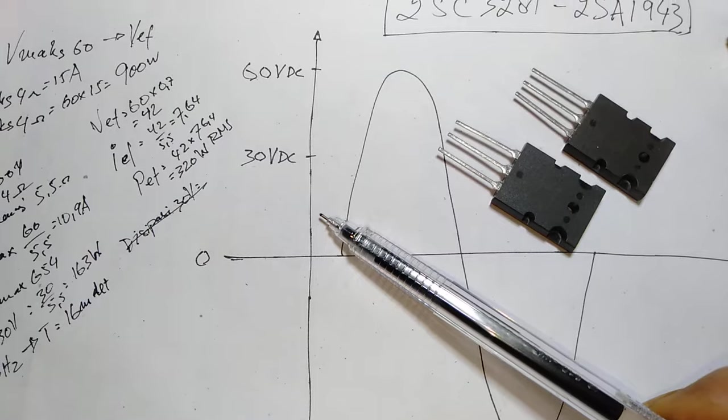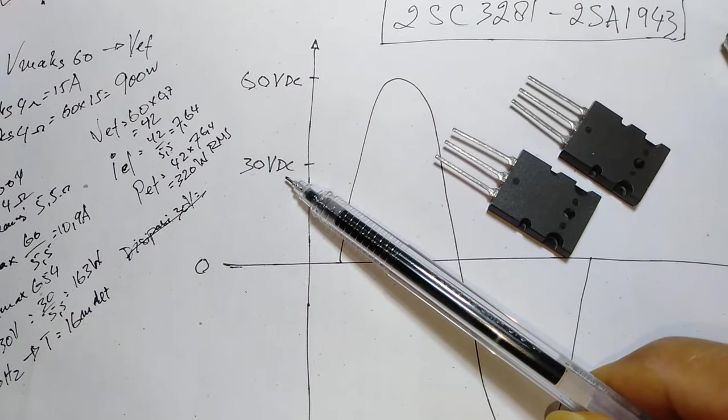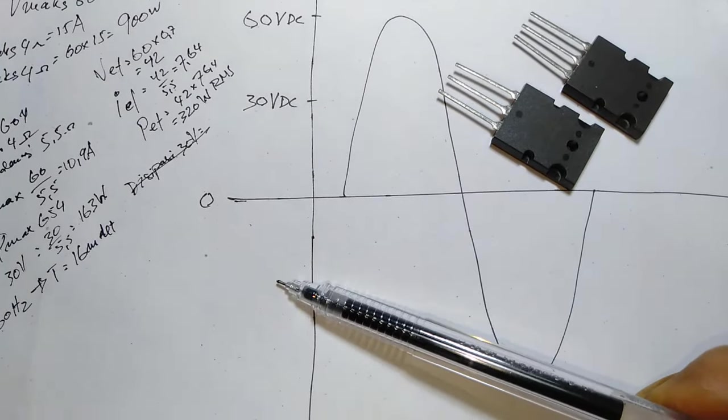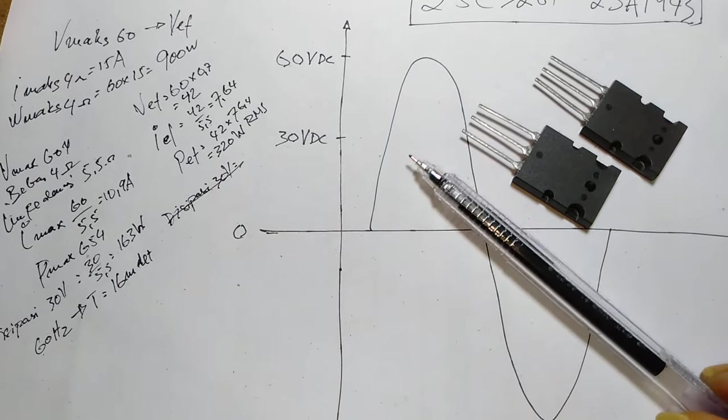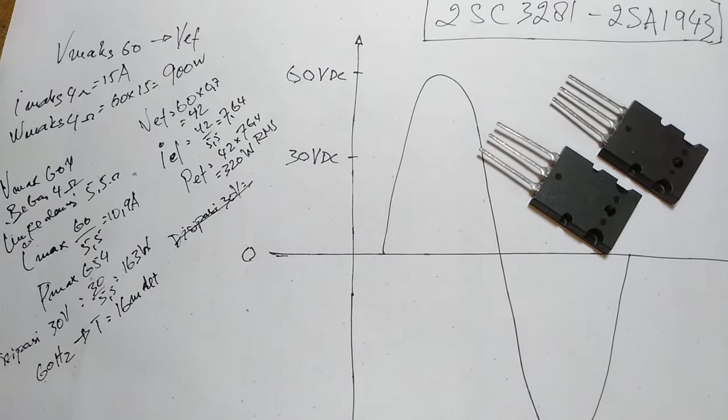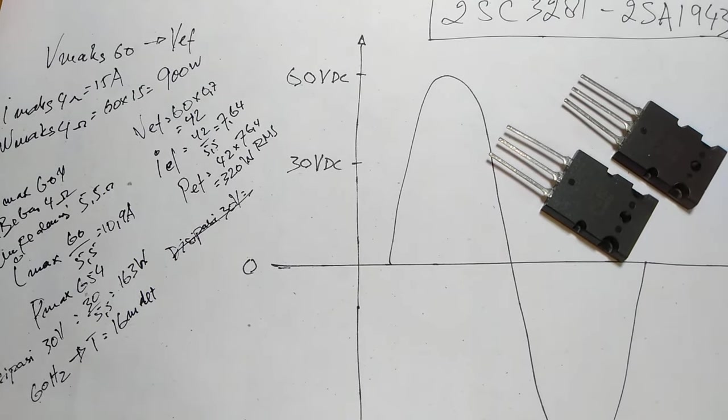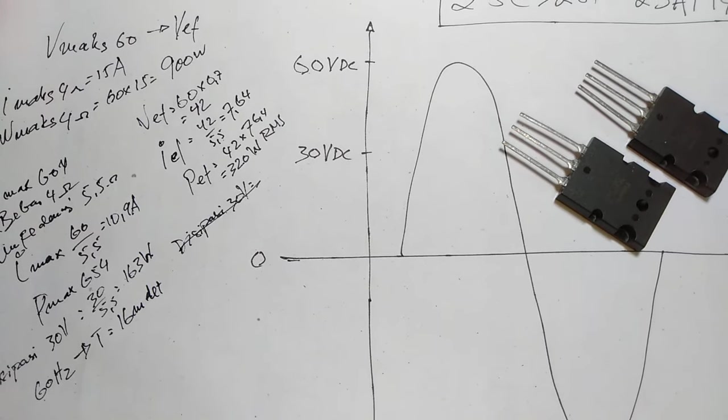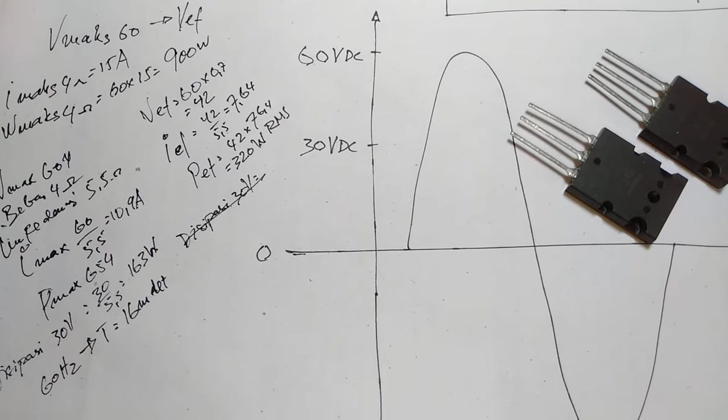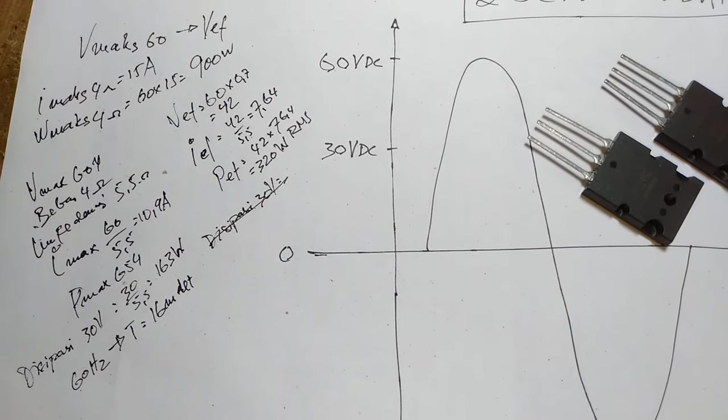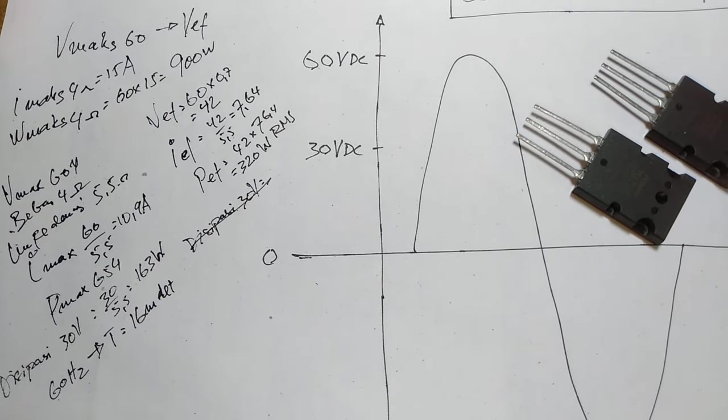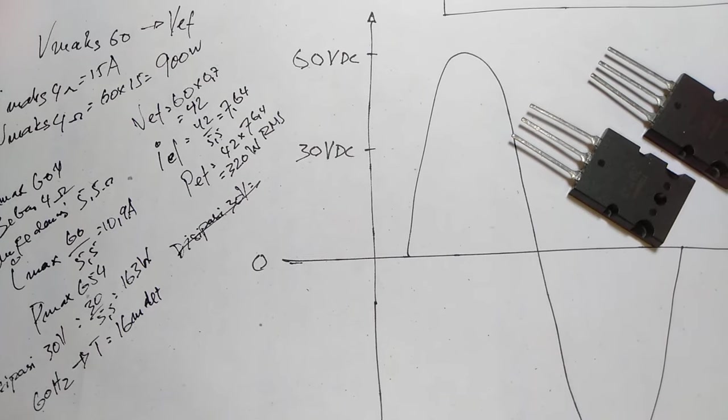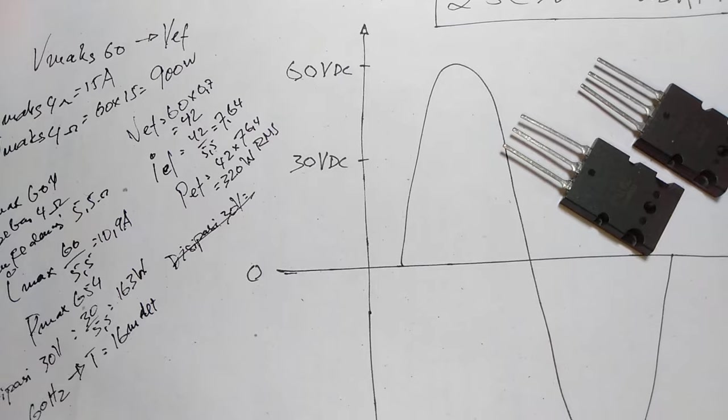Jadi AC ketika diratakan oleh dioda bridge ya, CT nya ini ke bawah minus ya guys. Ketika diratakan itu akan menghasilkan isi muatan pada elko ya. Kalau elkonya itu udah penuh nanti tapi tegangannya itu nggak setinggi pol AC ya, dia akan lebih tinggi ya guys ya, sekitar 5% sampai 10% ya dari pol AC.